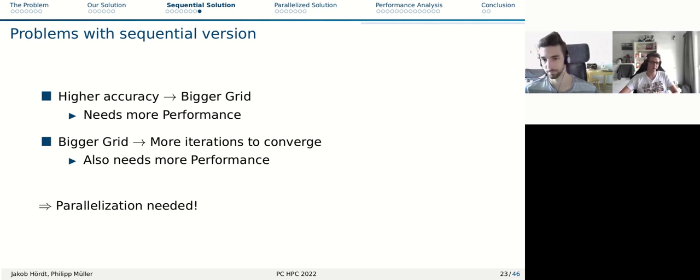The problems with our sequential version is we want higher accuracy because we are laying a grid over the whole thing. And the bigger the grid is, the more accurate is our solution in the end. A bigger grid needs obviously more performance because it's more points to calculate. Also, a bigger grid leads to more iterations to converge, which also needs more performance, which leads us to parallelization that we need.